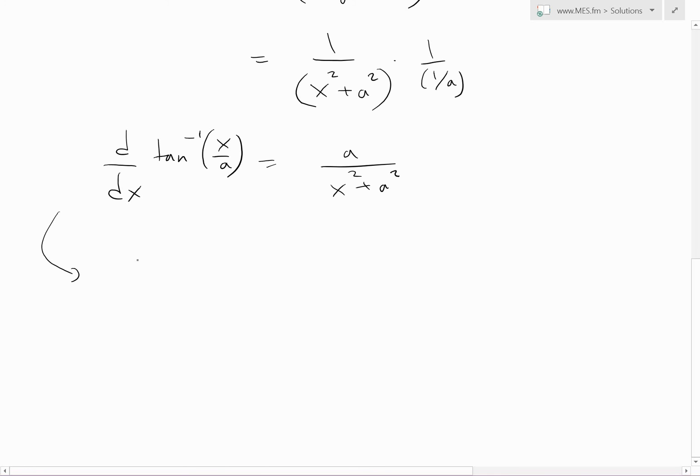We'll put it down here: 1 over a, d over dx, inverse tan of x over a, equals 1 over x squared plus a squared.